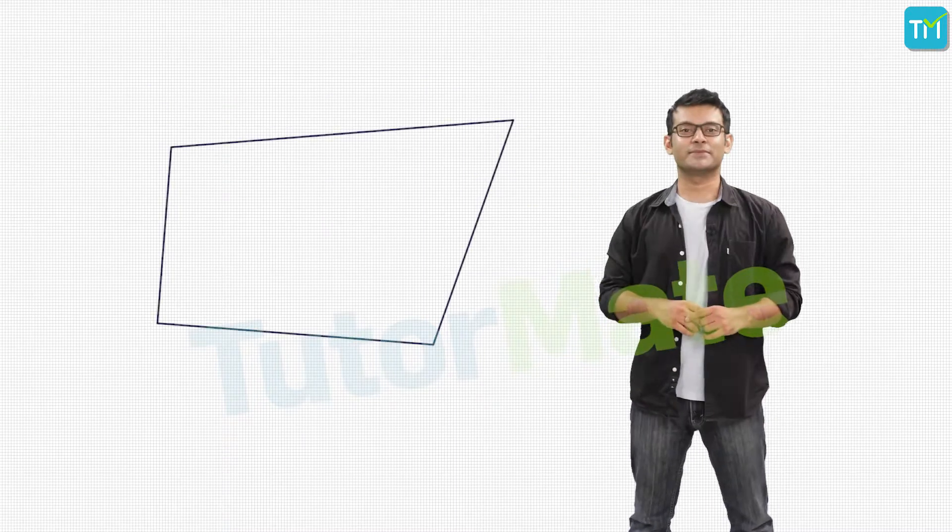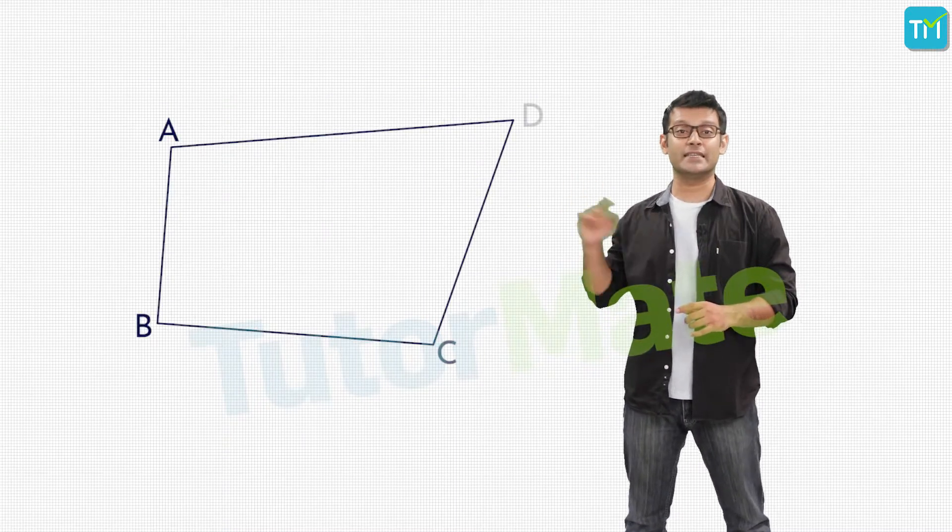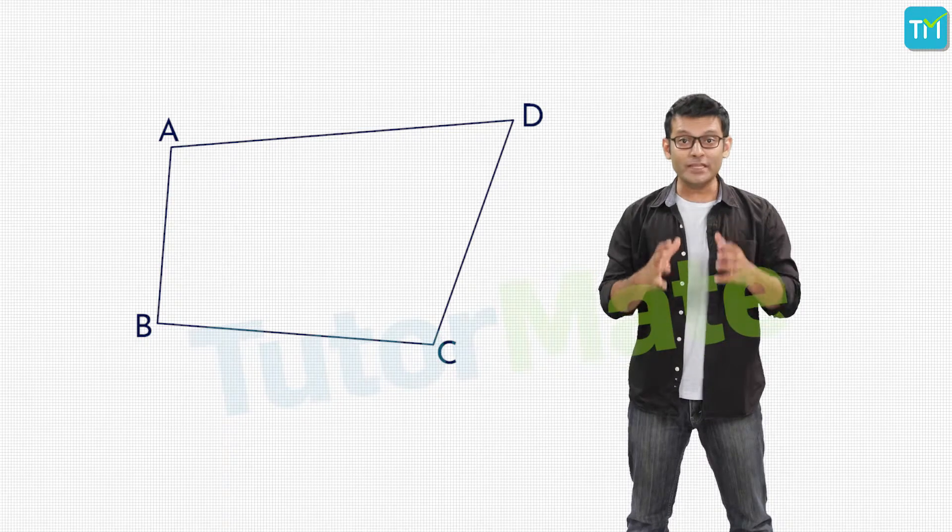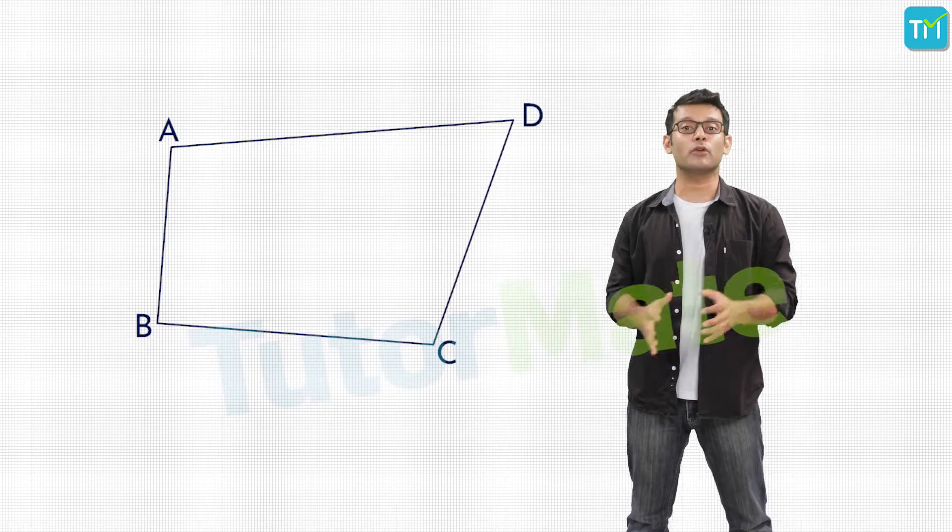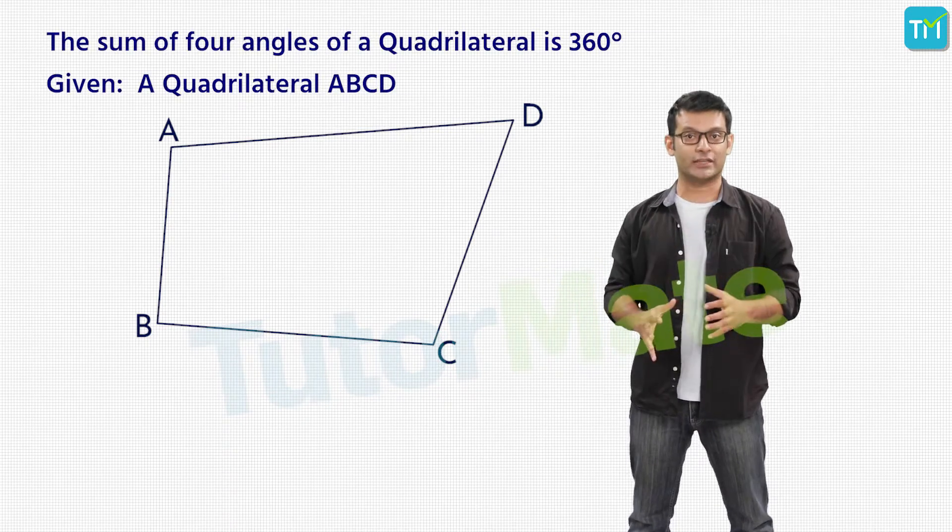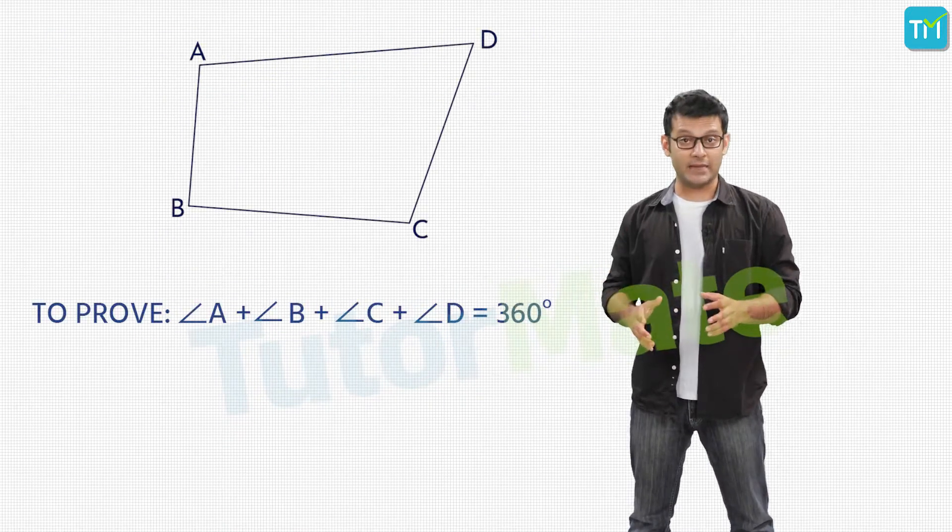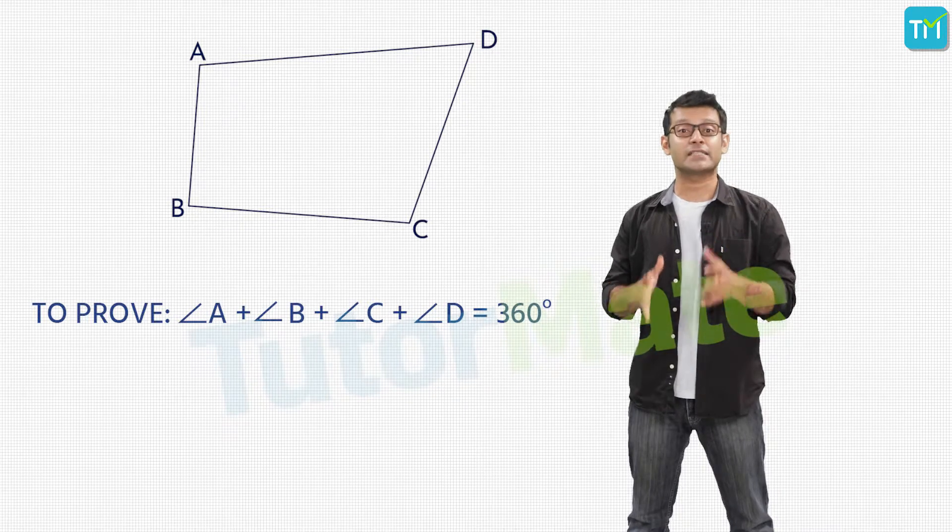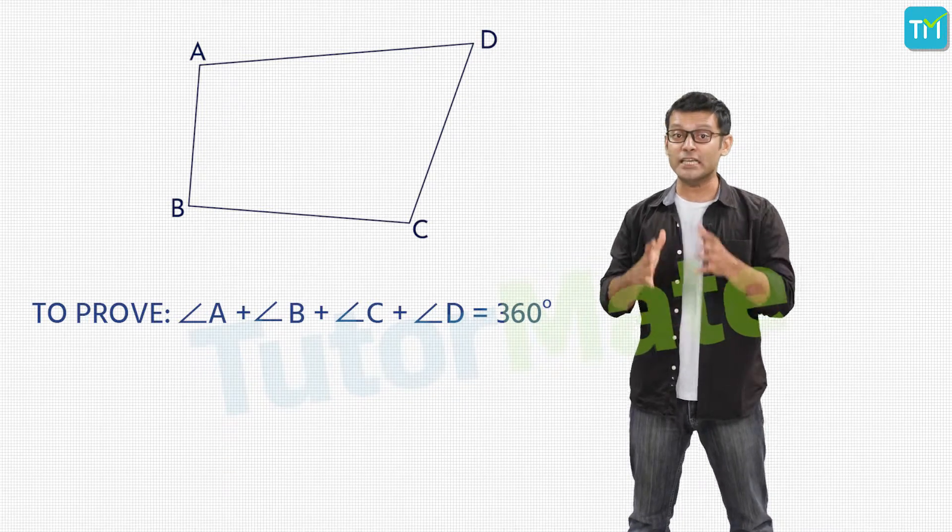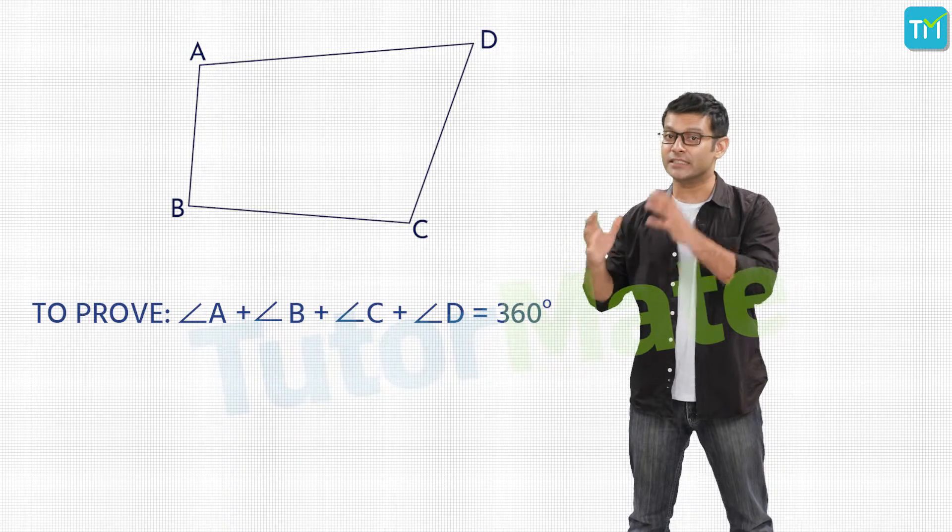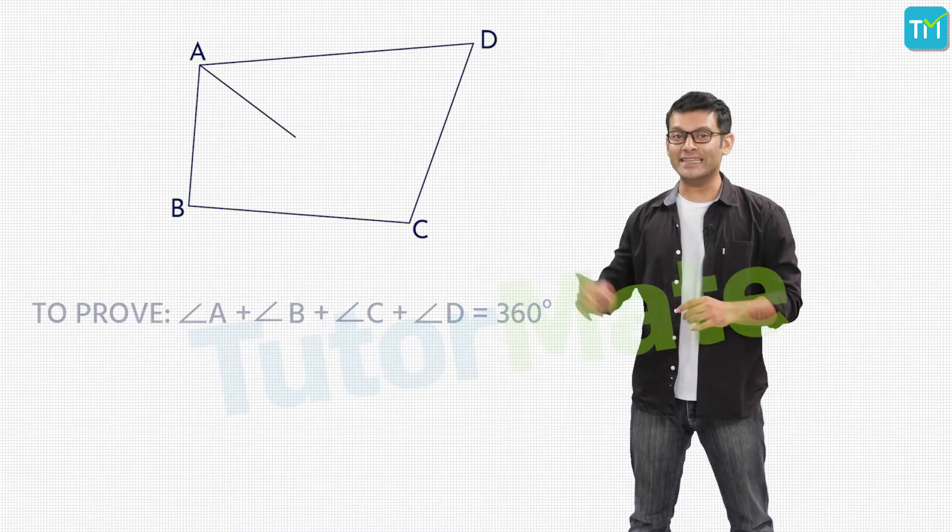Say I have a quadrilateral here, which is called ABCD. And now, all we need to do is prove that the sum of the four angles in a quadrilateral are equal to 360 degrees. This means that angle A plus angle B plus angle C plus angle D is equal to 360 degrees. Let's begin by joining AC.